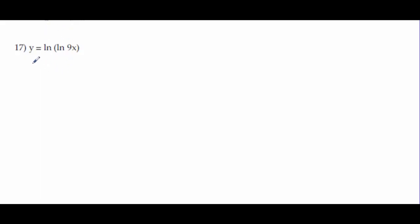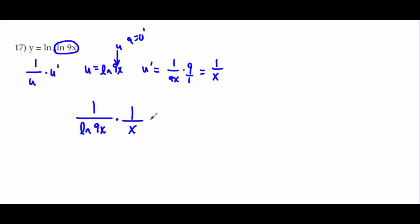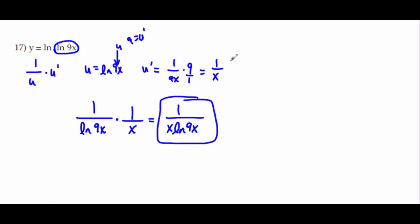Problem 17: ln(ln(9x)). Using the formula 1/u times u′, u = ln(9x) and u′ is the derivative of ln(9x). For that inner derivative: 1/(9x) times 9, so the 9s cancel and u′ = 1/x. Therefore the answer is 1/(ln(9x)) times 1/x, written as 1/(x · ln(9x)).